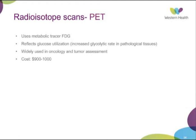PET scan — we don't use it much here at Western Health, but it's used more at centres doing bone tumours. It uses a metabolic tracer FDG, reflecting glucose utilisation. Increased glycolytic rate in pathological tissues produces increased uptake. It's widely used in oncology and tumour assessment, and is quite expensive at about $1,000.